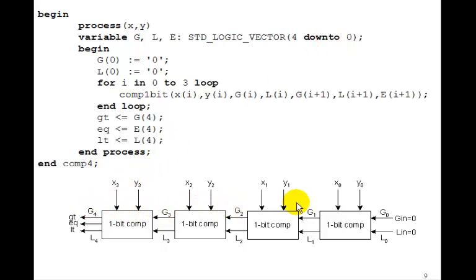So we have g4, g3, g2, g1, g0, l4, l3, l2, l1, l0. And we'll also include e4, e3, e2, e1, and e0. Now, of course, we don't use the lower four ones. We're only going to use e4 when it comes out.